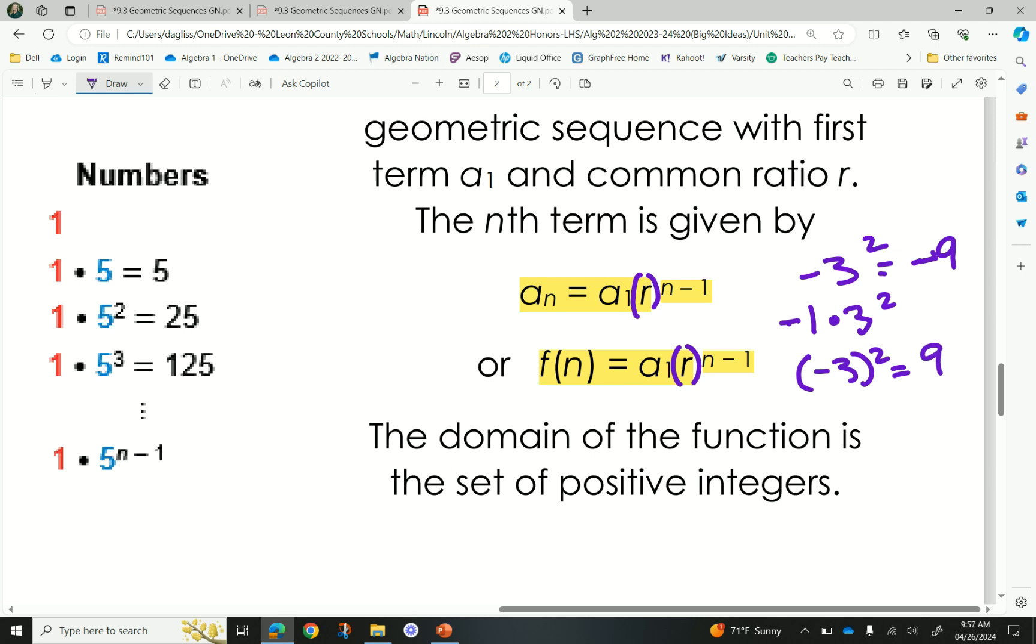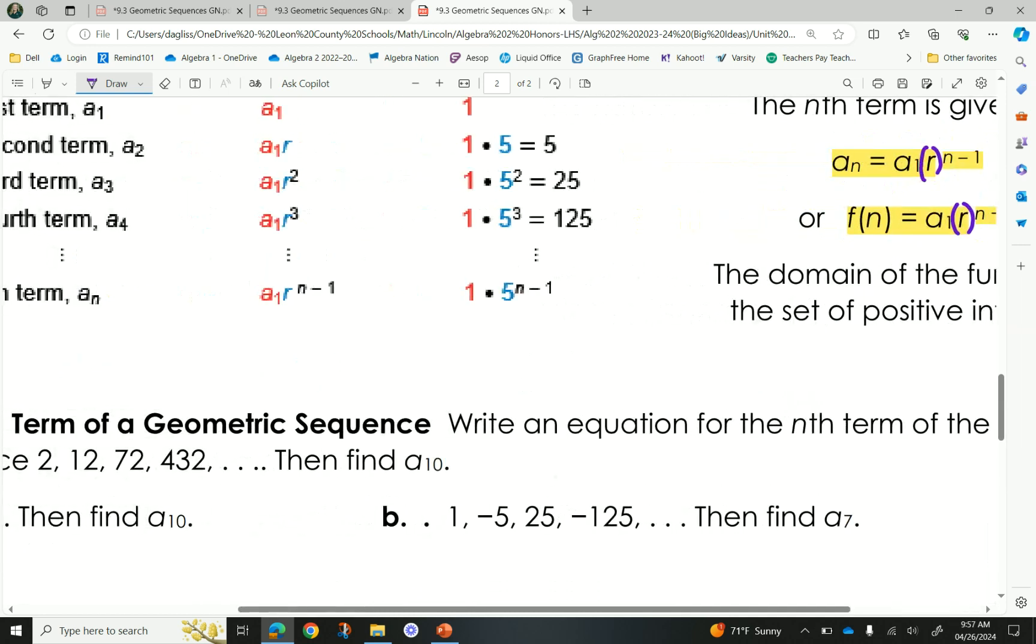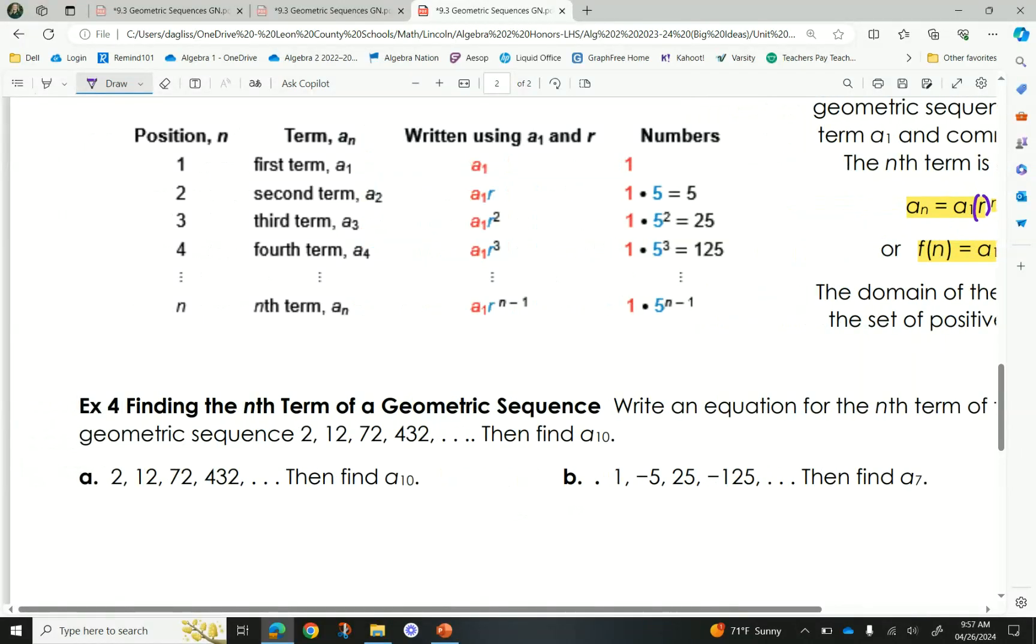Some of you are like, duh. But some of you need to hear this because it's a very common mistake that happens. Right? Just like before also, the domain of the functions is a set of all positive integers. We're only going to plug in positive values. We are doing positive terms. We're not going to go backwards in our terms. Okay? Well, something different and called a recursive formula, which is not in our standards anymore, so we don't have to do it. All right. So let's write some equations.